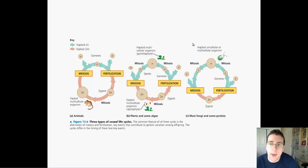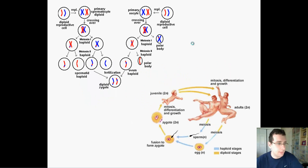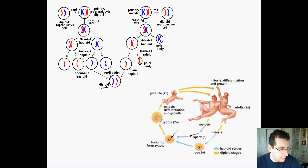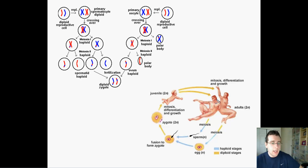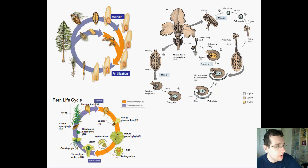Mitosis happens twice throughout the cycle in the plant and fungus versions, but only once in the animal cycle, because the gametes don't reproduce in animals. Now I'll show you briefly some specific examples. The classical animal method: each organism makes a gamete, those gametes join through fertilization, making a diploid zygote, which goes through mitosis from zygote to juvenile to adult, which repeats the process.